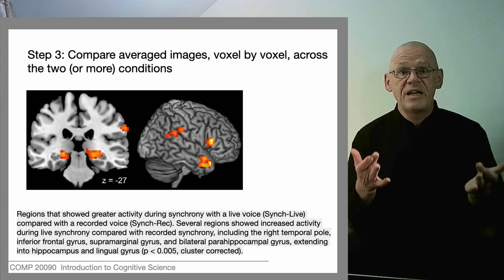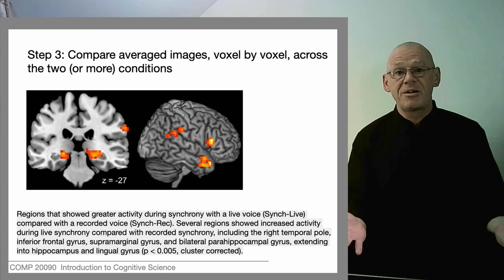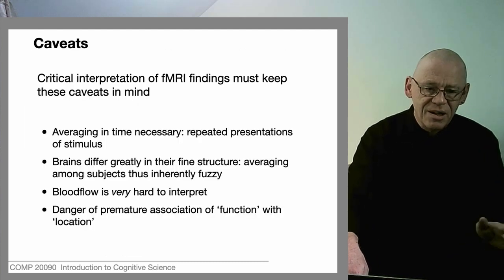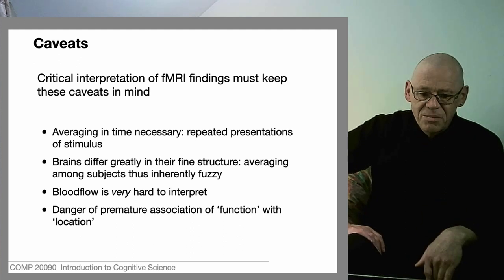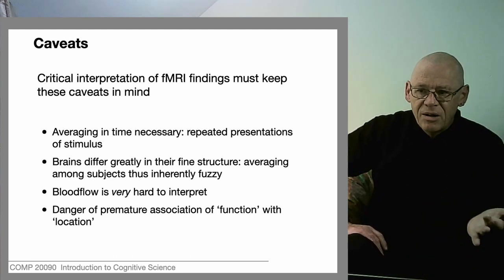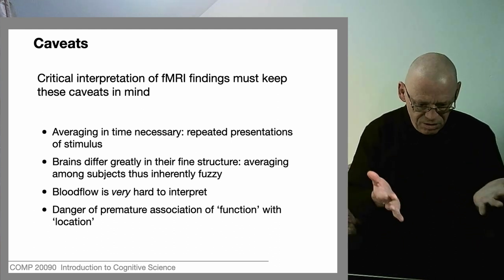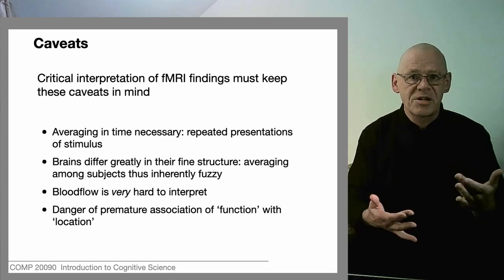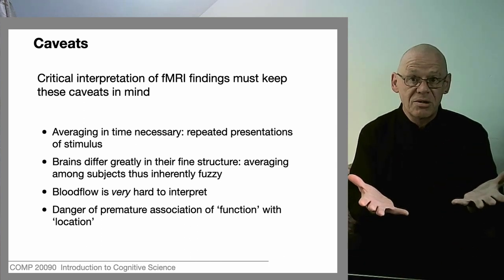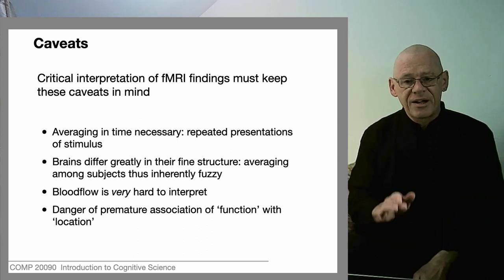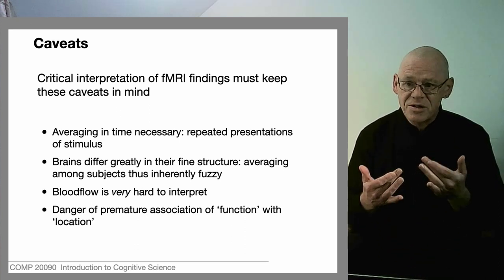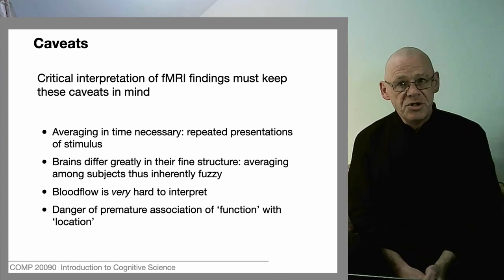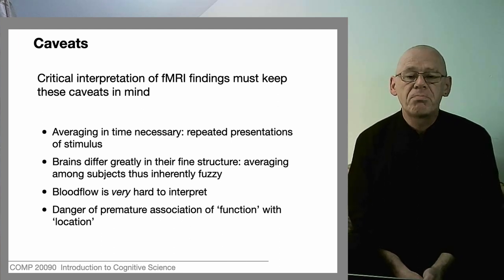These images really set the world alight — they inflame the imagination — because people immediately believe you can read things off them: that you could see people thinking, or see the seat of the emotions. Nonsense. Critical interpretation needs to keep a few things in mind. First, we're looking at the brain under experimental conditions in which we've repeated two conditions many many times — not at an active organ making sense of its world, but at an organ in a weird structured experimental situation. Brains also differ greatly, so we have to interpret results in terms of the underlying anatomy for each person. And what we're measuring is changes in blood flow — the relationship between blood flow and what neurons are doing is poorly understood.